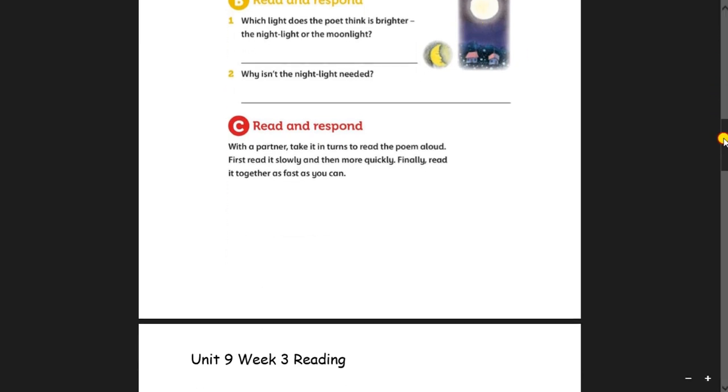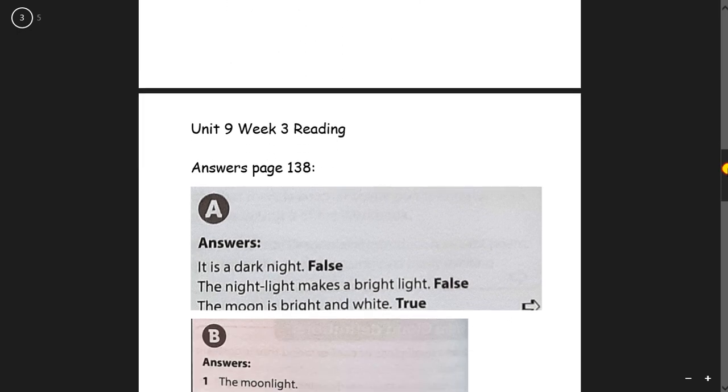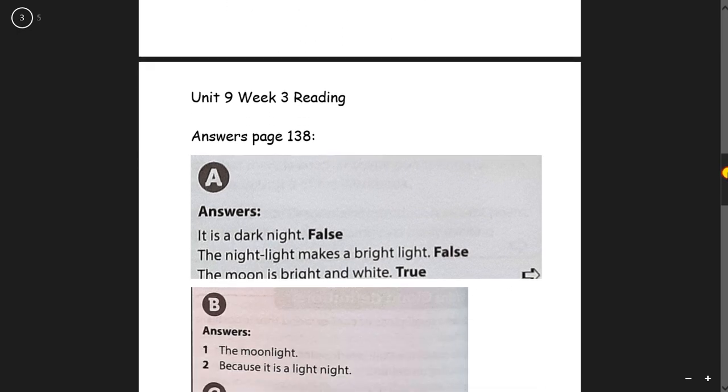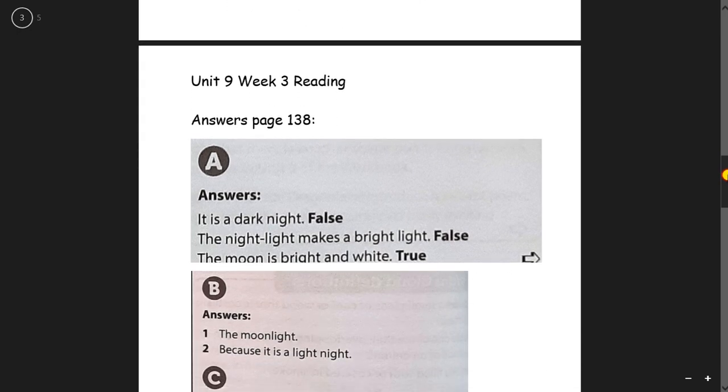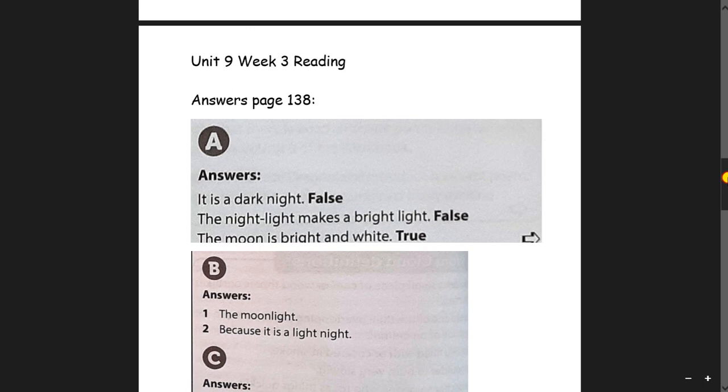And on the last page I will upload this on LMS for you. It's a dark night. These are the answers. False. The night light makes a bright light. False. The moon is bright and white. True.